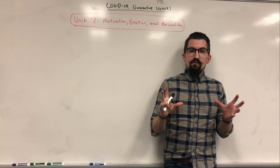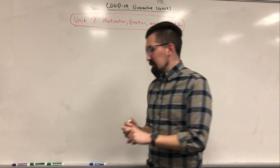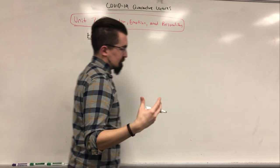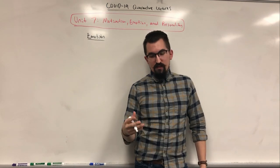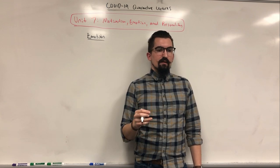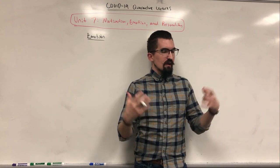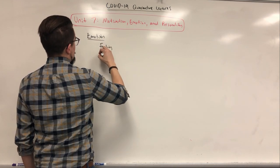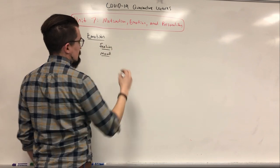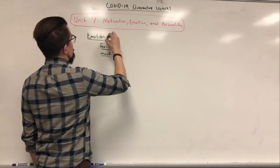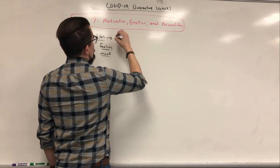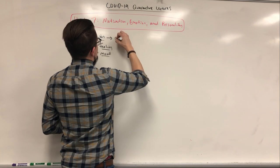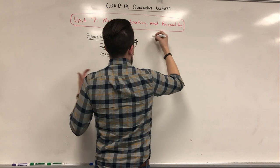Next up in our unit 7 discussion is going to focus on emotion. This is a topic that could really confuse students, so let's first define what emotion actually is. Most people get the terms emotion, feelings, and mood confused — they use them interchangeably, but they're actually technically different as far as what they characterize or represent. Emotion is definitely related to feelings and mood, but they are separate as far as technically what they actually are. Emotion is by definition a response to an external stimulus.